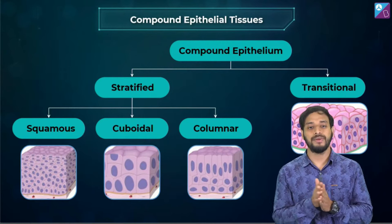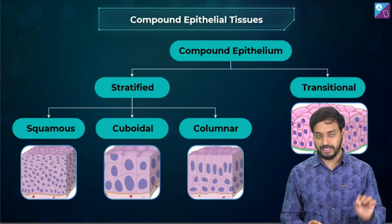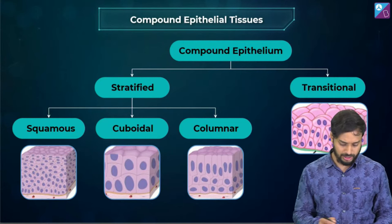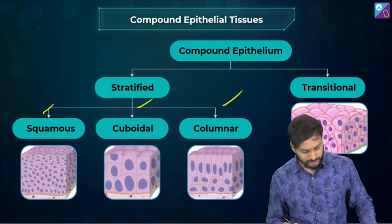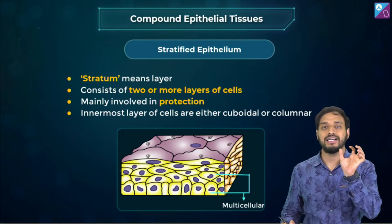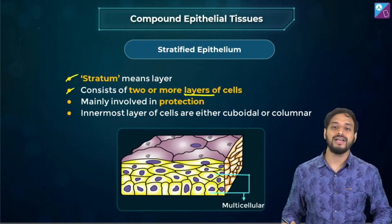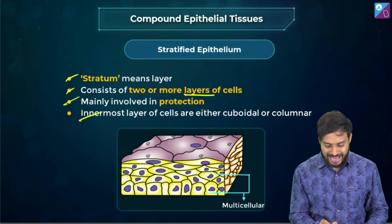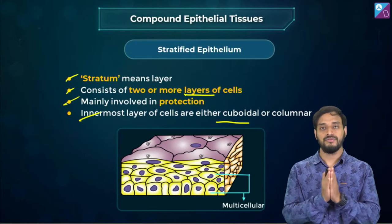Compound epithelium — so far we discussed simple epithelium. Now compound epithelial tissues. Stratified — the word comes from stratum, meaning layer. It consists of two or more layers of cells. Major function is protection. The innermost layer of cells is either cuboidal or columnar.